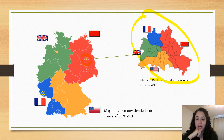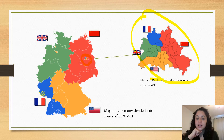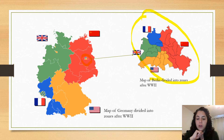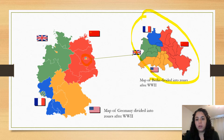Germany was divided because they wanted to make sure that it was weak enough so it could not gain power again. They wanted to divide it as a way of making sure they could control the military power and economic power that Germany had. There are multiple reasons, but we're going to focus on the city of Berlin.